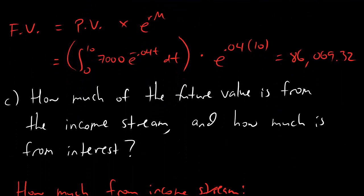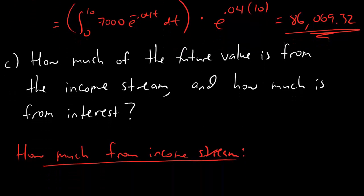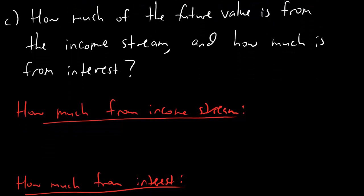If we're trying to find how much of the future value comes from the income stream and how much is from interest — all of the future value comes from one of two things: money that you invested, or money that the bank gave you as interest. So, everything is either income stream or interest. What we're going to do is calculate how much comes from the income stream, then subtract from the total to find how much comes from interest, because everything is either income stream or interest.